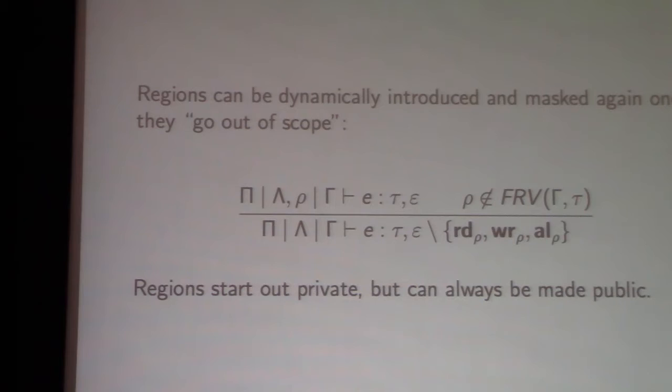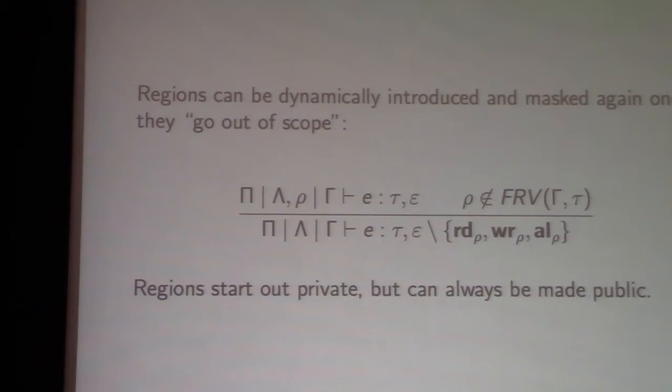We can dynamically allocate new regions. The rule says we can allocate a new private region row for the duration of some computation e, but we have to ensure that the row region doesn't leak — it cannot appear as a free variable in gamma or tau. Provided that's the case, we can mask out the region afterwards: it's conceptually gone out of scope, so we can forget the region and remove all effects on it. All regions start out private but can become public.